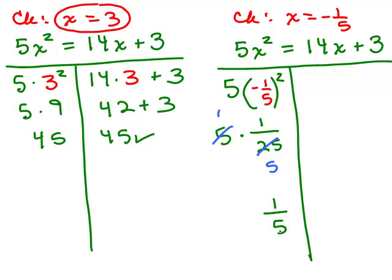So this side reduces to 1/5. On the other side, we have 14 times negative 1 fifth plus 3. So I have -14/5, and I have to get a common denominator for 3, so I need to write that as fifths, and that will be 15/5. You multiply numerator and denominator by 5 to get 15/5, and -14/5 + 15/5 is 1/5.